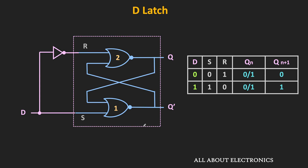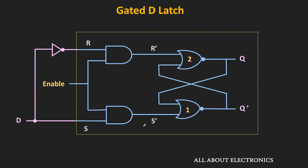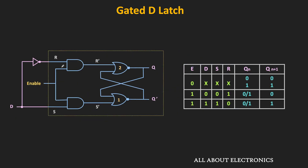With the same little modification, the gated SR latch can be converted into the gated D latch. This portion of the circuit is the gated SR latch, and by using one more NOT gate, it can be converted into the gated D latch. When the enable input is low, irrespective of the value of the D input, the latch will hold its present state — because when enable is 0, both S-bar and R-bar inputs will be 0. When the enable input is high, the latch becomes transparent, and the output will be the same as the D input.